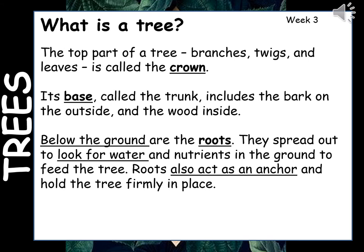Roots also act as an anchor and hold the tree firmly in place. The roots of a tree work the same way as the roots of a plant — they act like straws that suck up water and all the minerals and nutrients from the soil to help the tree grow. The roots also anchor the tree: just like a ship's anchor stops it from drifting, the roots dig deep into the soil and make sure the tree stays in place and doesn't fall over in the wind.